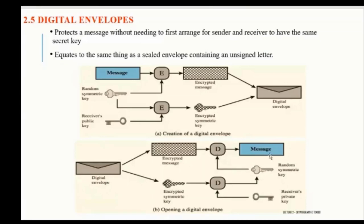After decrypting, the receiver gets the symmetric key, which is then used to decrypt the message. So in this method, we are using both the symmetric key concept and the asymmetric key concept. The advantage of this method is that your message is completely encrypted — nobody can see it. This method is called the digital envelope method.